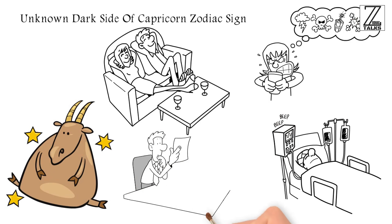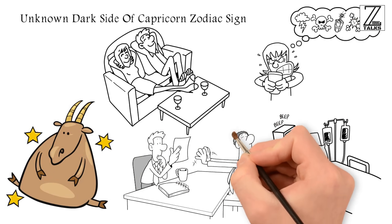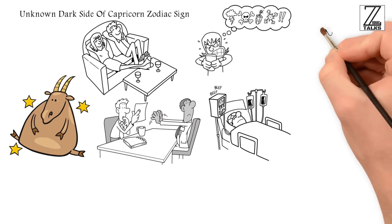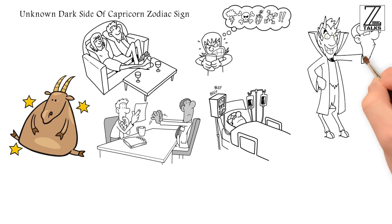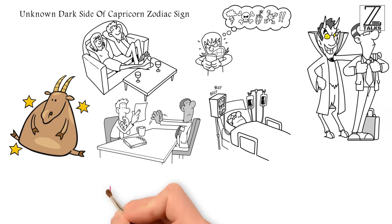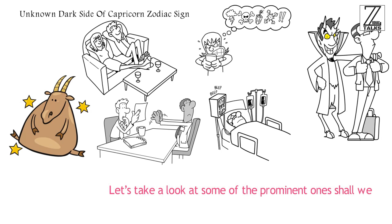Level-headed as they may be, Capricorns are not exempt from that splash of madness and negativity that is in every other zodiac. Despite their seemingly calm state, they do have some evil traits lurking in the shadows, just waiting to be unleashed. Let's take a look at some of the prominent ones.